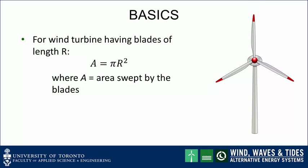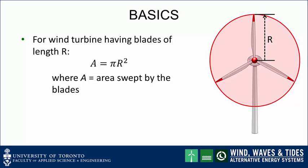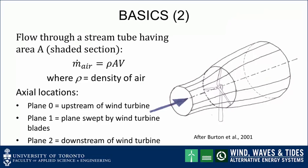Let's review a few basics needed for analysis. For a wind turbine having blades of length r, the area swept out by the blades is pi r squared. Mass flow rate m-dot through a stream tube having area A is rho A v, where rho is the density of the air. We can also identify a number of axial locations that will be useful in the subsequent analysis.